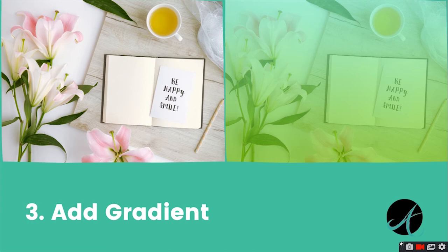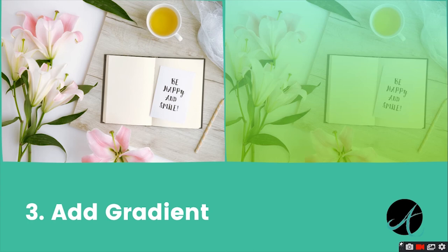Next is to remove elements. Just like we moved elements around, we can also remove elements entirely. On the image on the left, you can see there's a cup of coffee. If that's something you're not keen on having in your image, there are ways to remove it — so you can remove the cup and have a clean image that just shows the plant and the leaves.